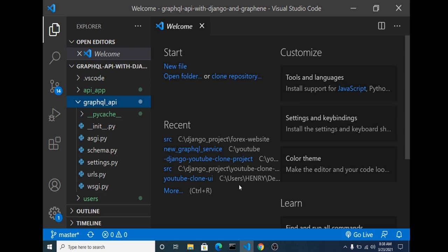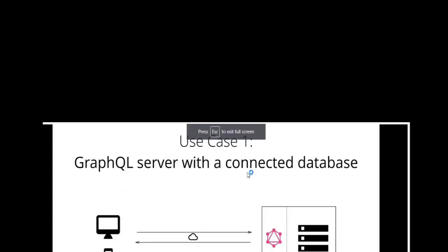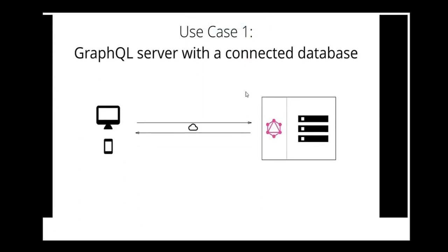Before we go into setting up our development environment or writing any code, let's look at the architectural use cases of a GraphQL API. A GraphQL API server can be used in a number of ways. Our first architectural use case is having our own backend database and building a GraphQL server on top of it, so that our clients can communicate with our backend database through our GraphQL server.